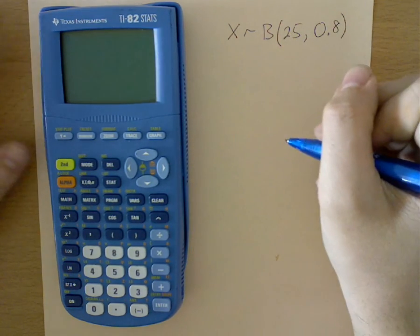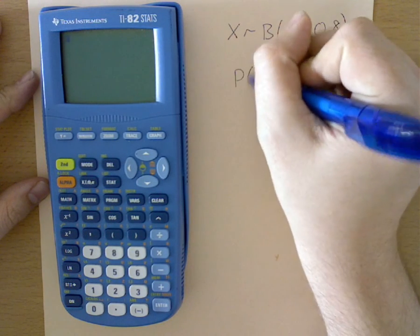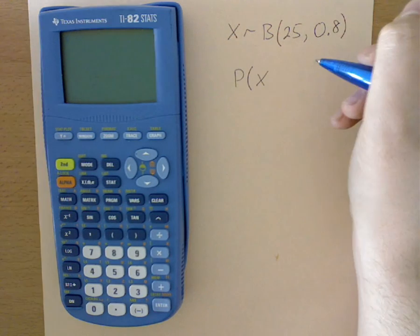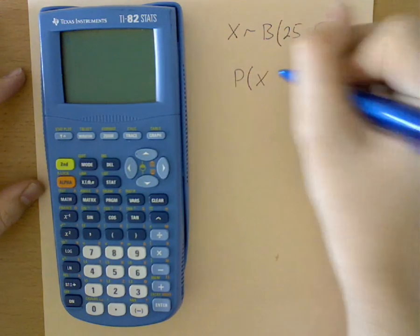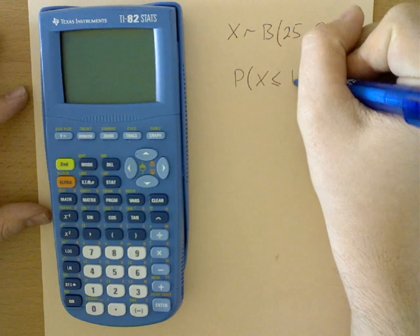And let's say I want to find what is the probability of getting at most 10 successes. So at most 10 successes.